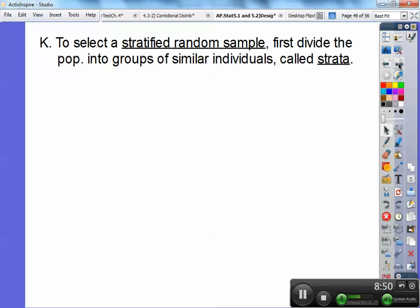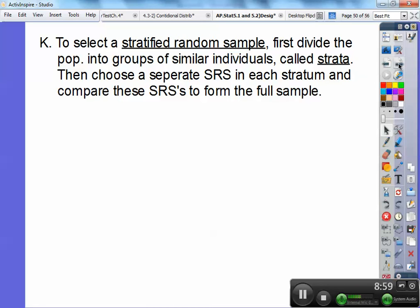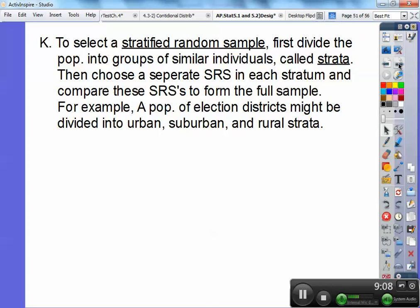Section K. To select a stratified random sample, first divide the population into groups of similar individuals. And they're called strata. Then choose a separate SRS in each stratum and combine these SRSs to form a full sample. Almost done, you guys. For example, population of election districts might be divided into urban, suburban, and rural strata. And then, so, last example, who wrote that song?